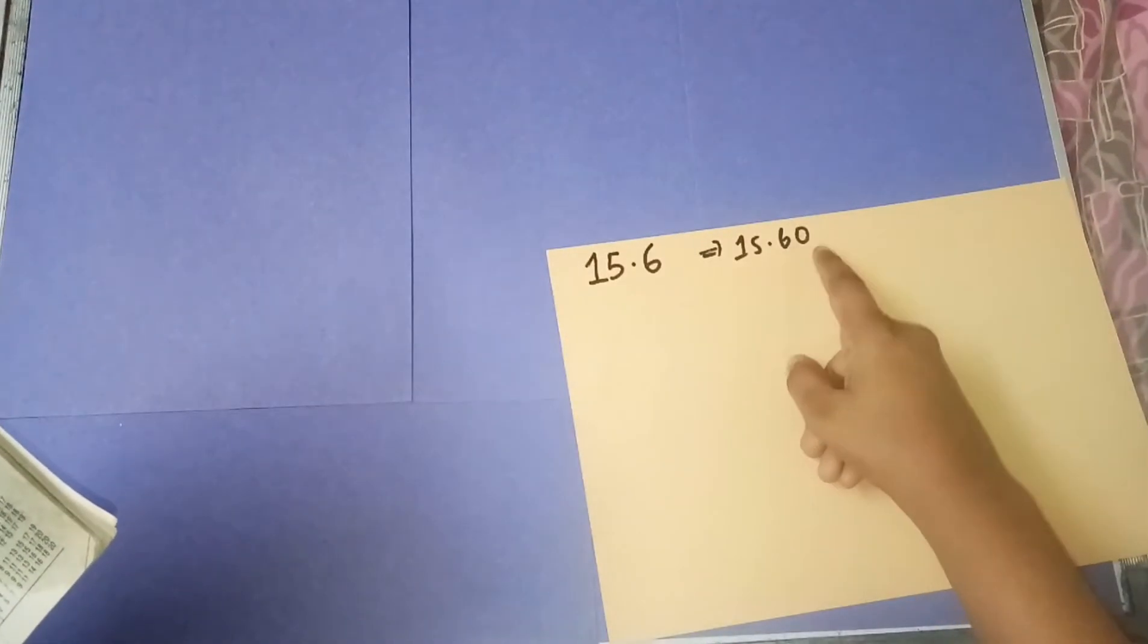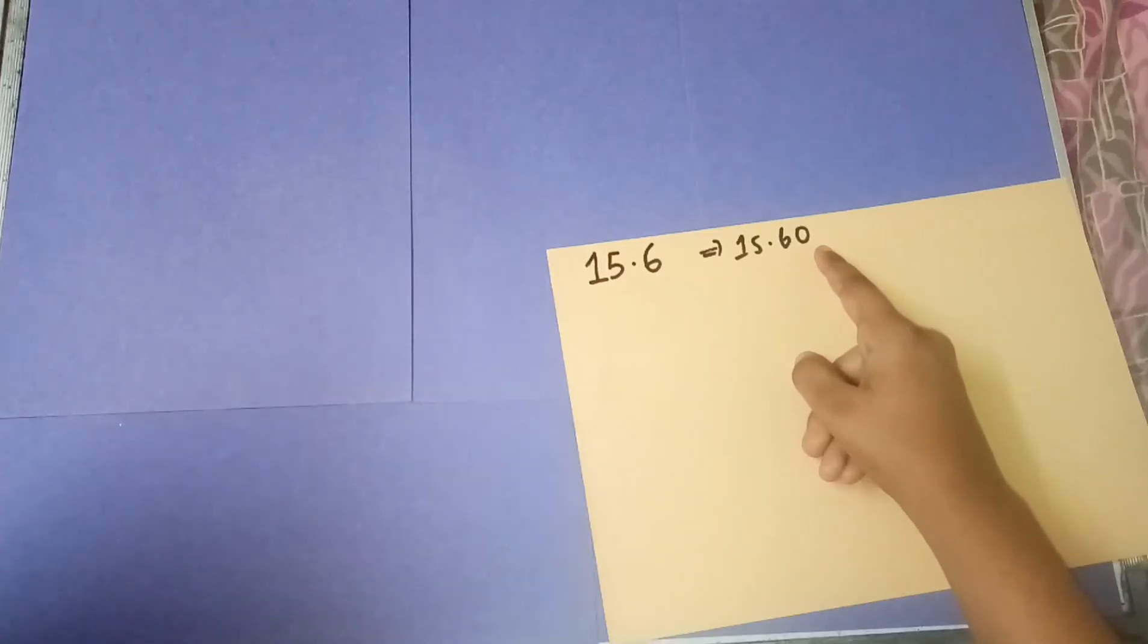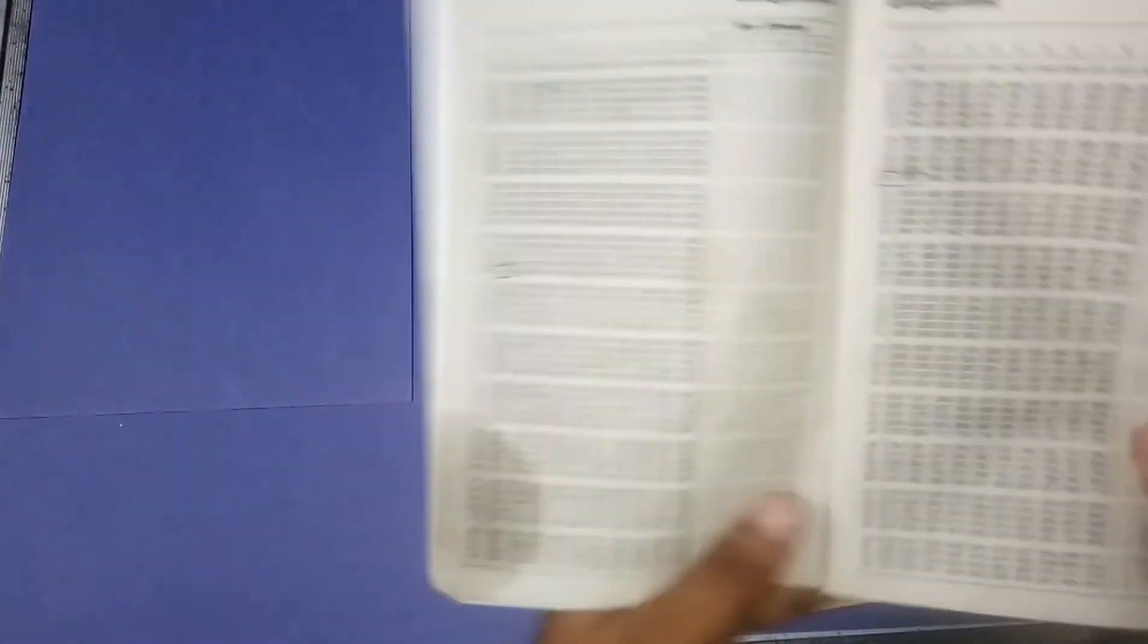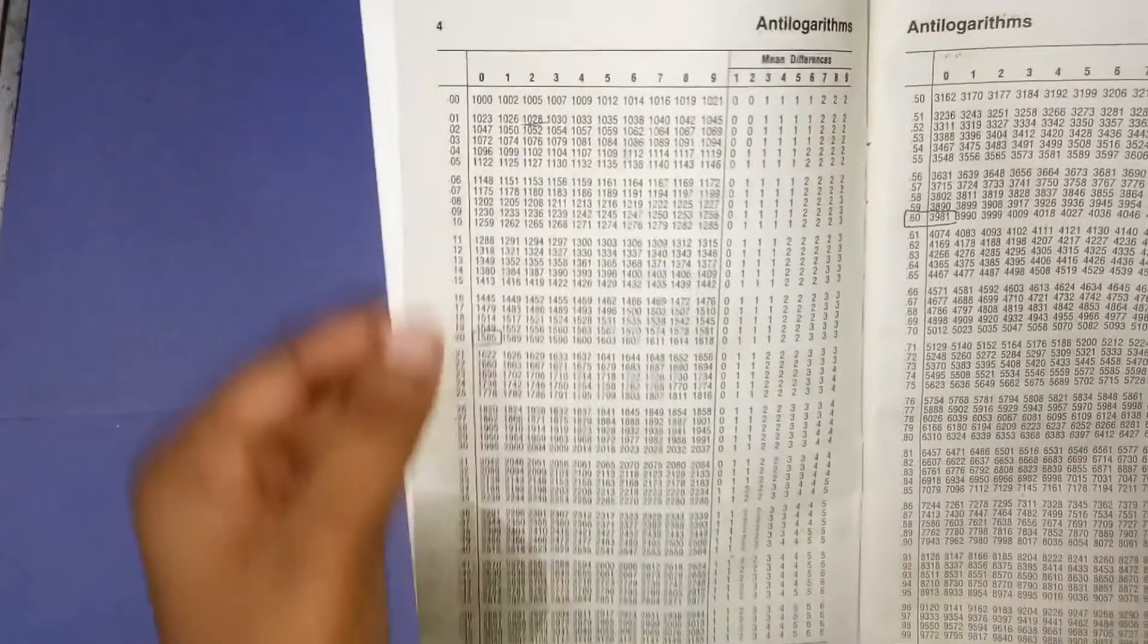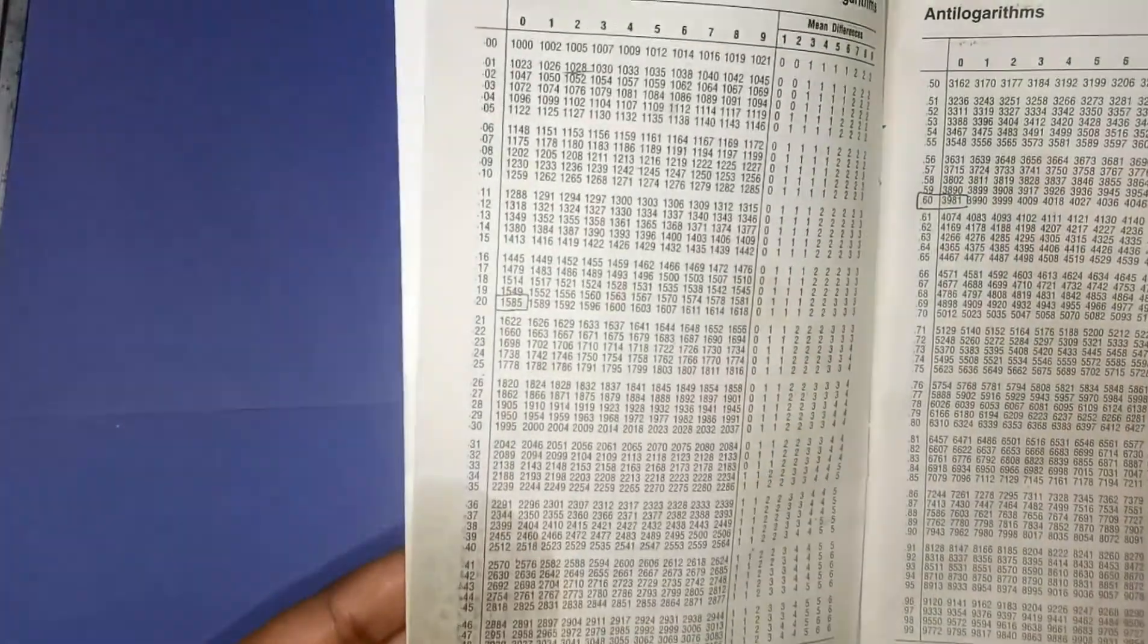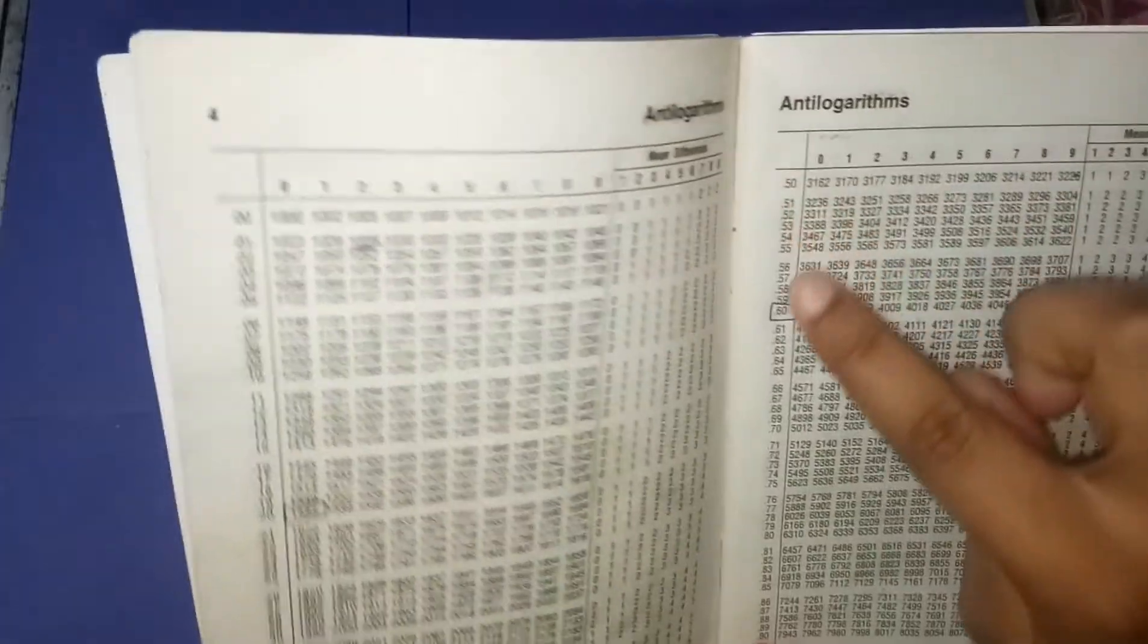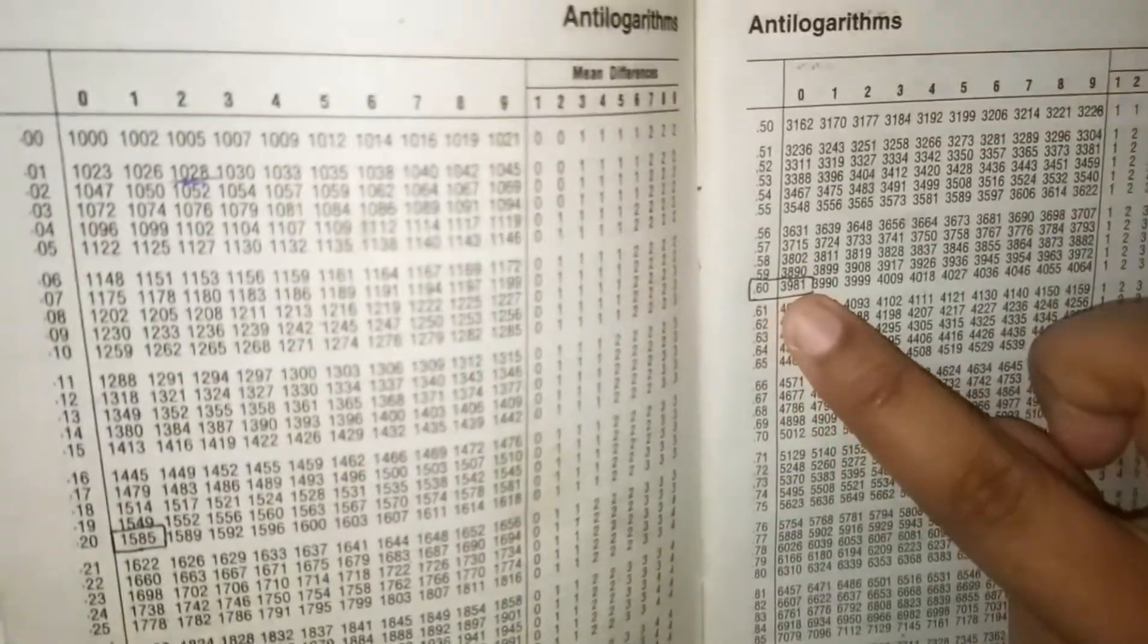First, you're going to take your antilogarithm book and detect 0.60 under the antilog page. In the first page it's from 0.00 to 0.49, and when you come to the second page you get 0.60 here.